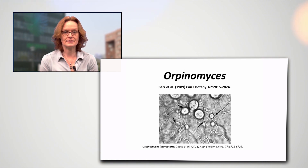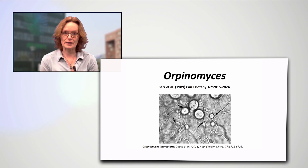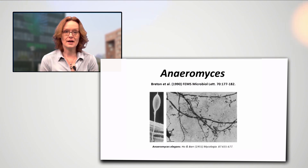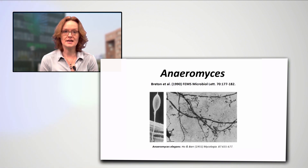Orpinomyces was the first polycentric fungus characterised and is named after Orpin. Aneuromyces is also a polycentric fungus and differs from Orpinomyces in terms of the number of flagella present on its zoospores.